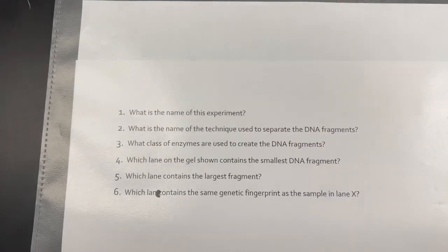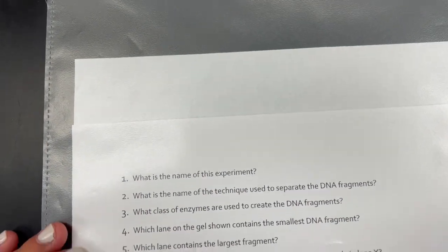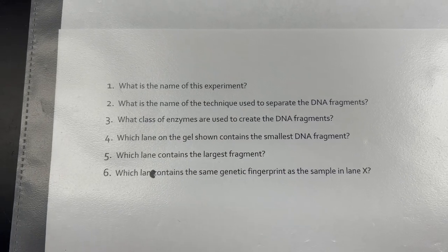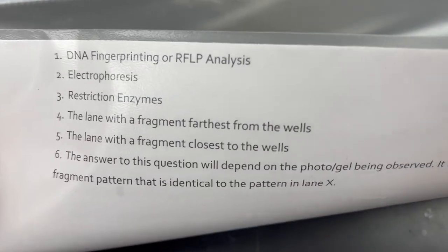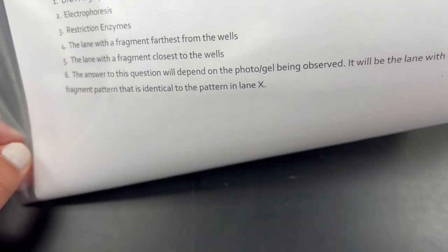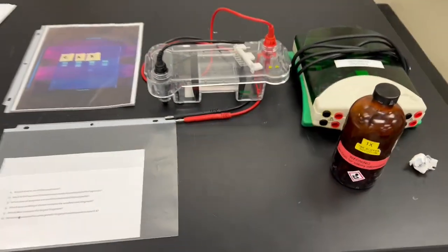This experiment is called DNA fingerprinting or RFLP analysis. The technique used to separate DNA fragments is electrophoresis. The class of enzymes used to create fragments are restriction enzymes. The smallest DNA fragment is found in the lane farthest from the well; the largest is closest to the well. The lane containing the same genetic fingerprint as lane X would be lane A.